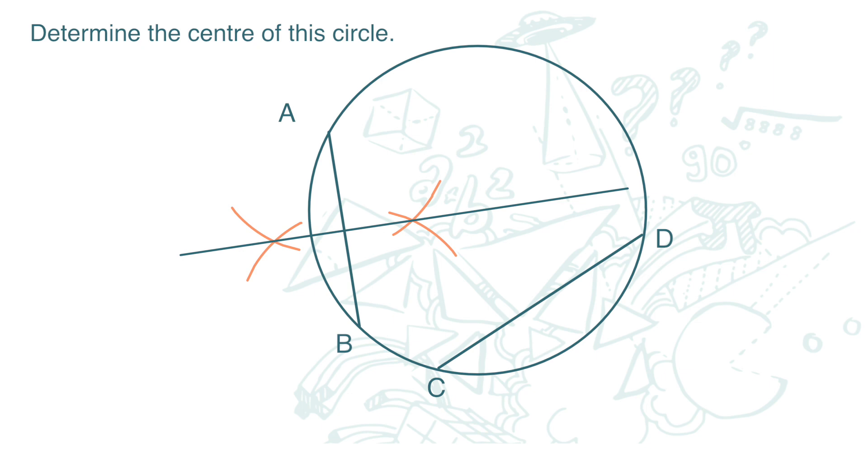We do the same thing to C, D. And we also get the perpendicular bisector.